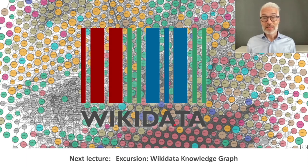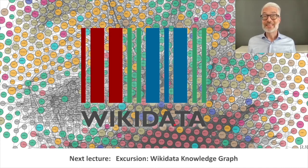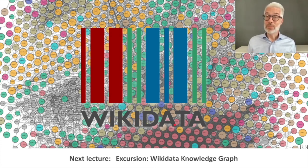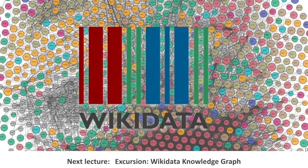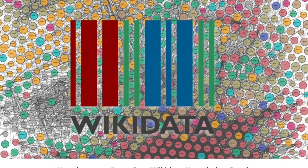That's it for DBpedia. There are more knowledge graphs, and we want to show you at least one more — which is, strictly speaking, not really a knowledge base, but nevertheless a knowledge graph: Wikidata. In the next lecture we have an excursion about the Wikidata knowledge graph, and we'll see you next time.